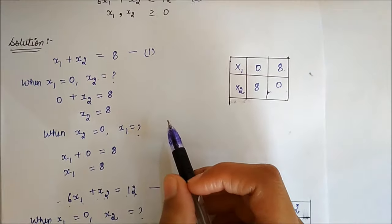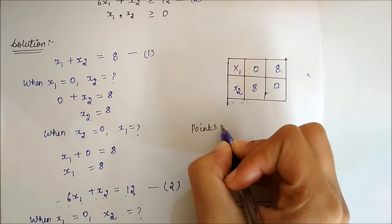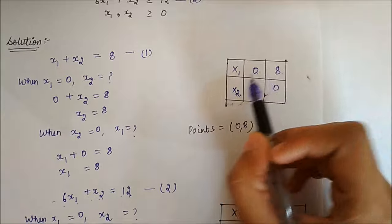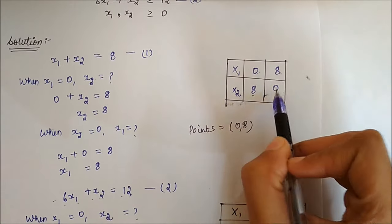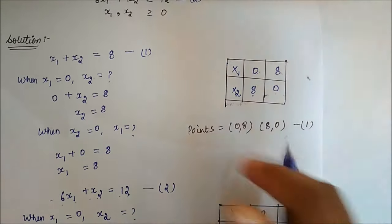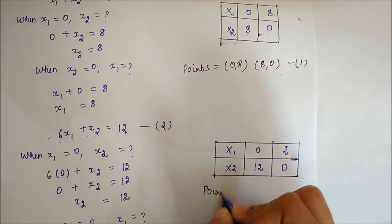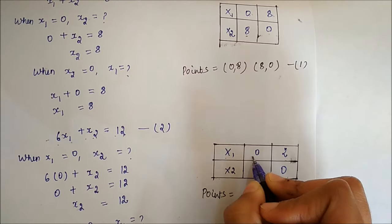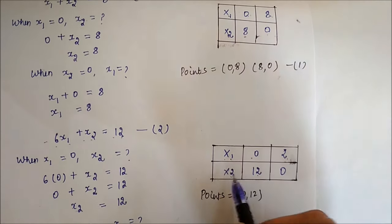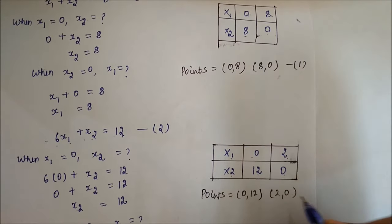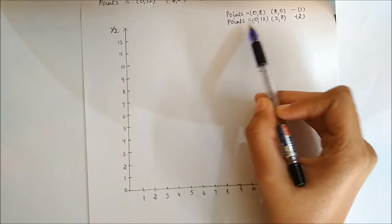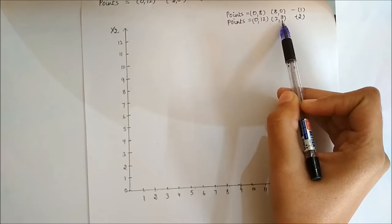So from the first equation we get two points: when x1 is 0, x2 is 8 — first point is (0, 8); and when x1 is 8, x2 is 0 — second point is (8, 0). From the second equation, the points are: first point (0, 12) and second point (2, 0). Now we will plot these points on graph paper.